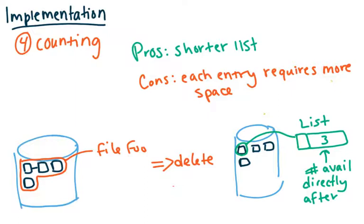Some pros. So again, you have a shorter list. You don't actually have to keep all of them in the list. The cons. So each entry is going to require a little bit more space because we're going to keep track of how many are available directly after it. So some cons, but in general, it's a relatively good strategy.